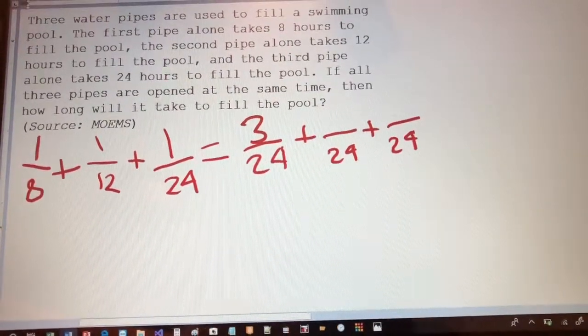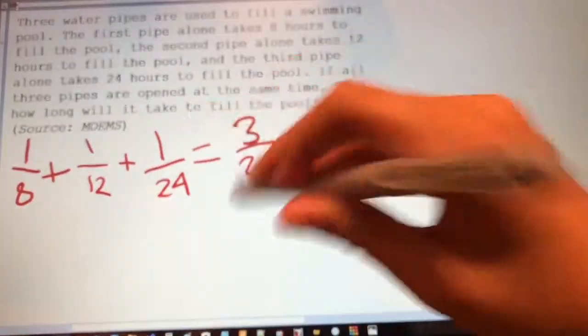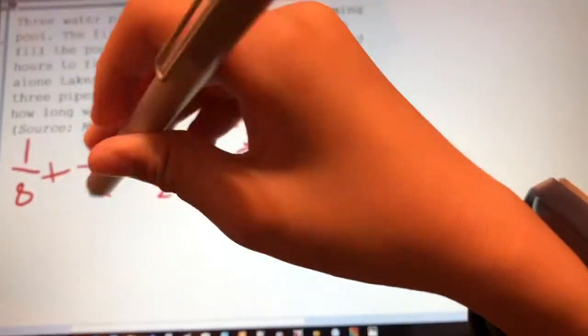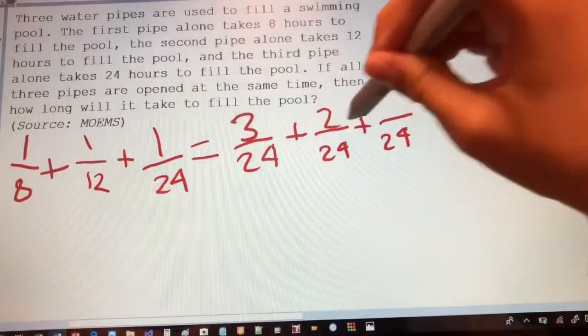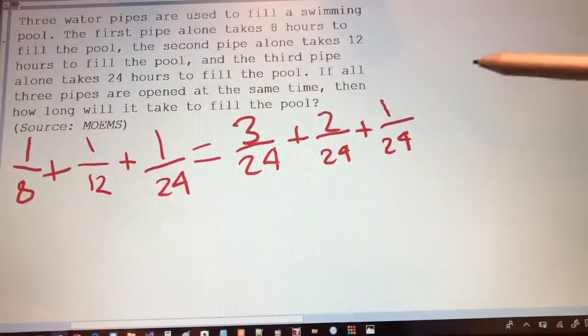And same with the 1/12th. That would be 12 times 2. So that means the numerator has to be 1 times 2, which is 2. And then of course, the 1/24th stays at 1/24th.